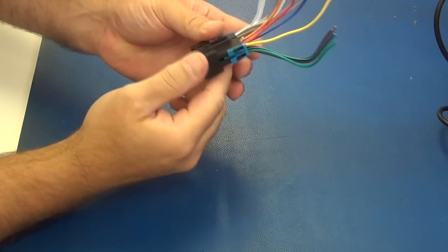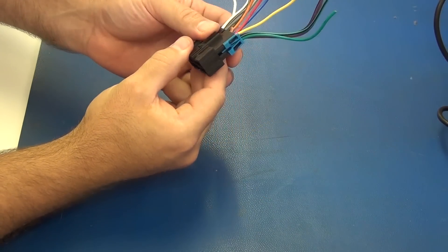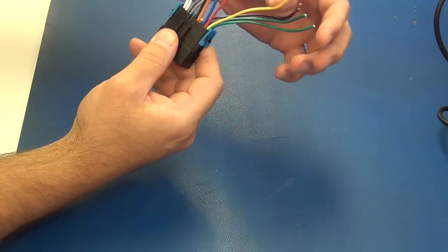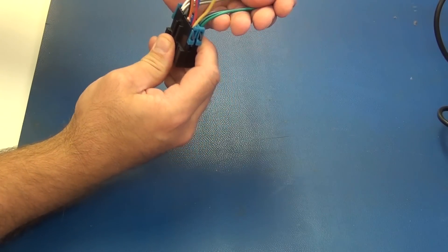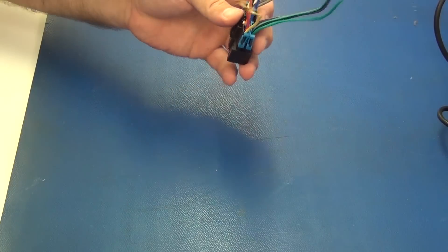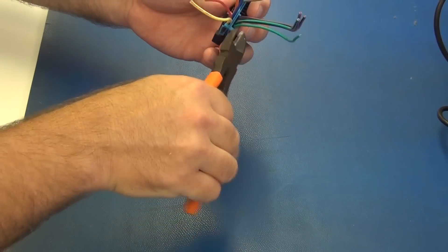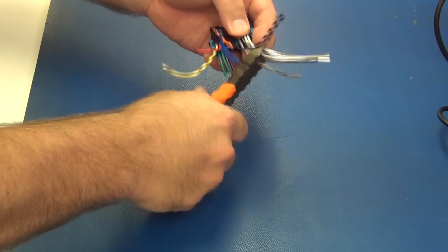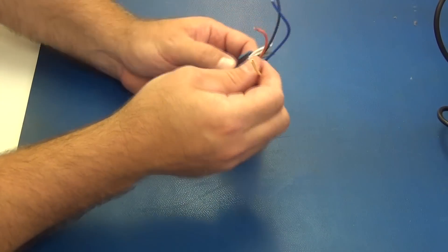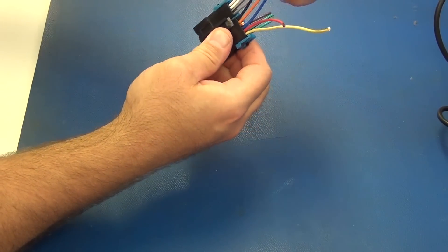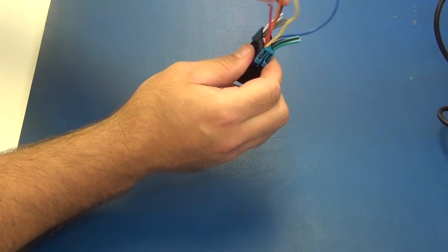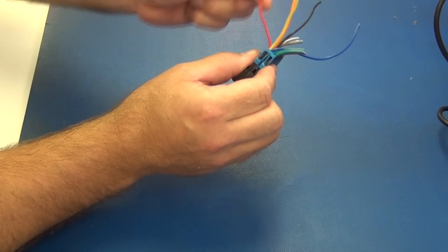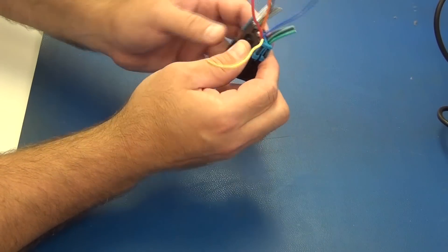Here is my GM connector that is going to plug in to the stock factory harness, and all the colors are pretty much the same. White, gray, green, and violet or purple are my speaker connections. Again in this system, I am not using any speakers, so I am actually cutting these right off. I don't need them. I will be connecting ground. I will be using a remote lead. I will be using my illumination, my switched power, and my full time power.